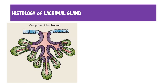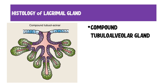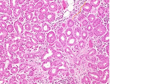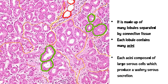Regarding the histology of the lacrimal gland: it is basically a compound tubular alveolar gland, structurally very similar to the parotid gland. You can see various lobules separated by connective tissue septa, which contain blood vessels. Within these lobules are circular structures called acini, each with cells arranged in a circular fashion forming the secretory component. The secretion of the lacrimal gland is a serous or watery secretion.